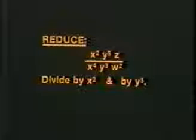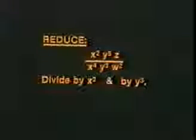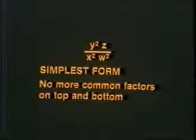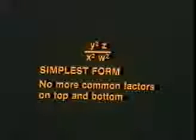One thing we commonly do with arithmetic fractions is to reduce them — make them simpler. We do that by dividing top and bottom by a common factor. And the same thing works with algebra fractions. If we divide this expression first by x squared and then by y to the third — both are common factors of top and bottom — we perform the two operations separately and carefully and end up with a simpler expression reduced to its simplest form, which has no more common factors on top and bottom.